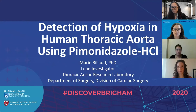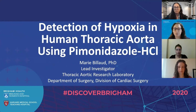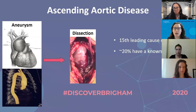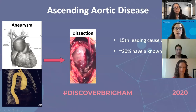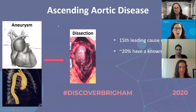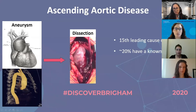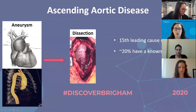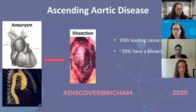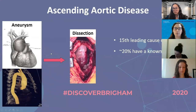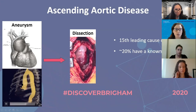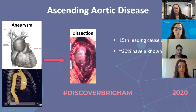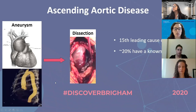I will talk today about human thoracic aorta and a way to detect hypoxia in this disease. So we're all on the same page — I am presenting this first slide with a description of what ascending aortic aneurysms are. They arise in the ascending aorta, and here on this 3D reconstruction of a CT scan, you can see a bulge of the ascending aorta, which is the definition of an aneurysm.